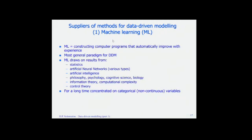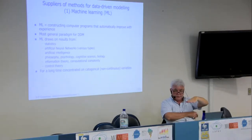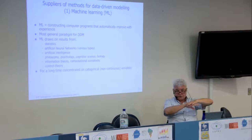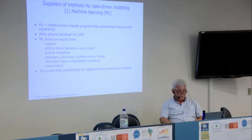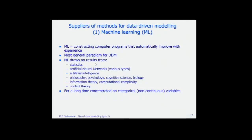Machine learning is a term that comes by itself, not from artificial intelligence. Artificial intelligence was based on rule-based systems and expert systems mainly. Machine learning appeared in parallel to it, but now these terms are used interchangeably. Experts would say artificial intelligence is building rules, and machine learning is more about neural networks and similar. Machine learning draws from statistics, neural networks, artificial intelligence, philosophy, psychology, information theory, complexity, and control theory — all these sciences are very much mixed.